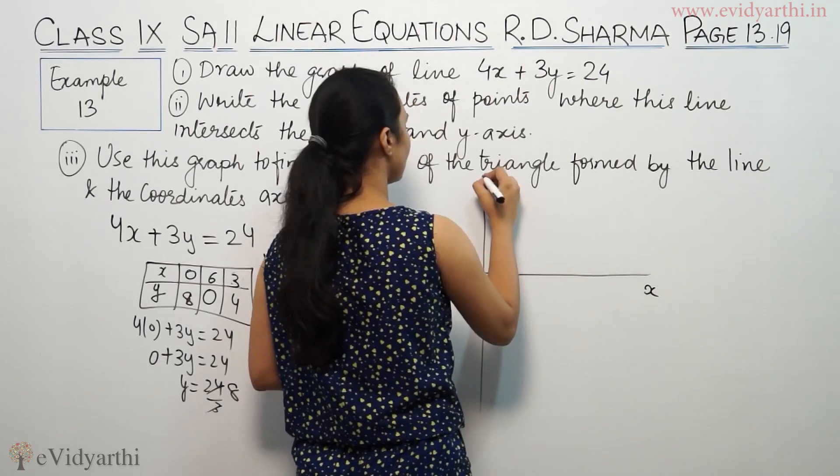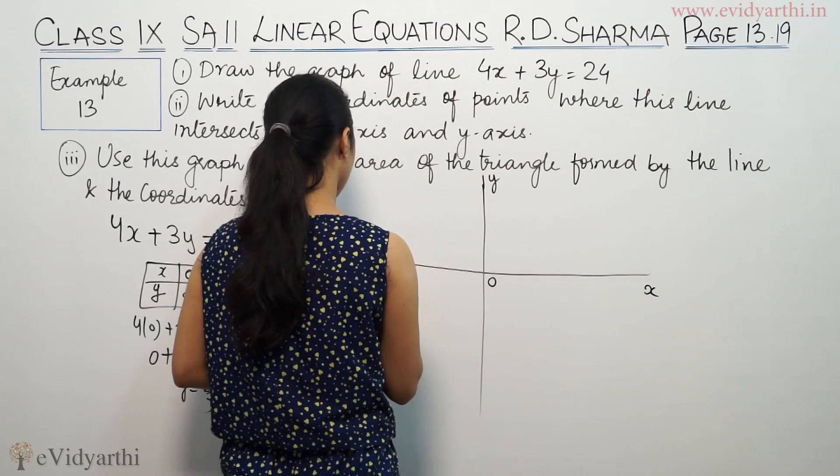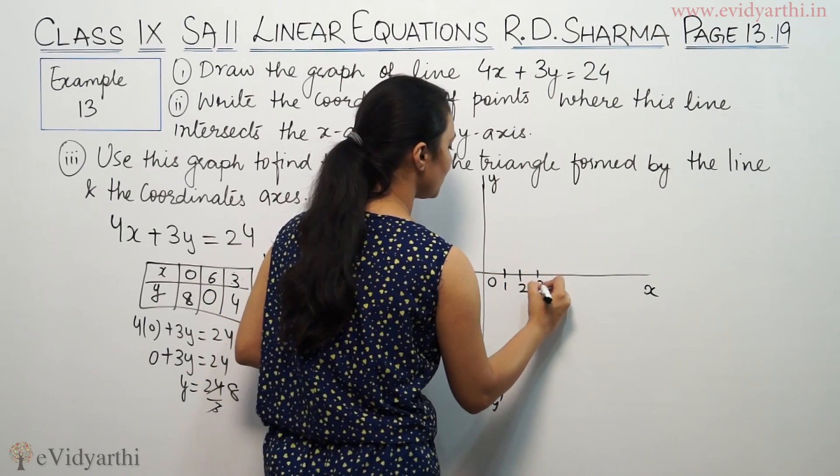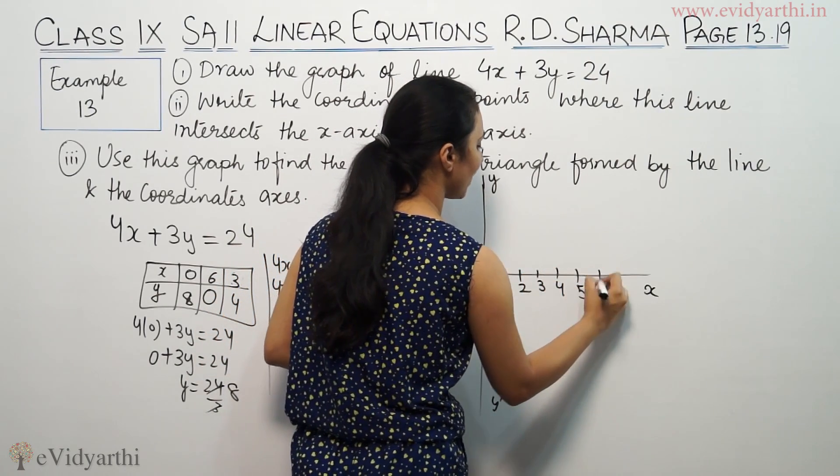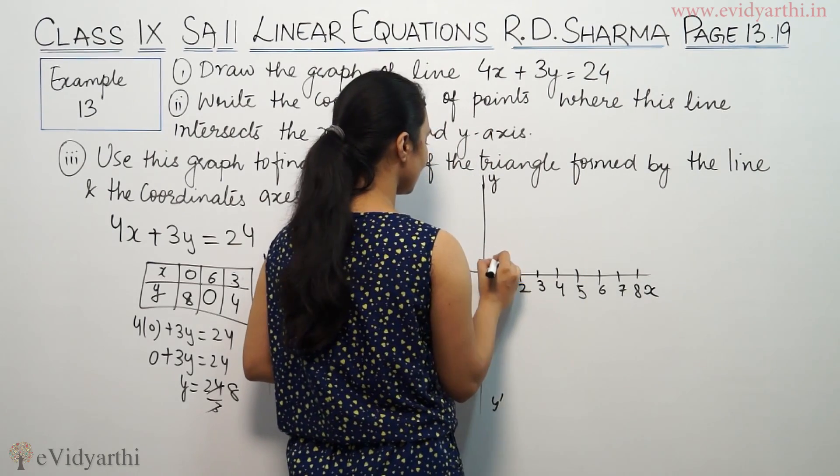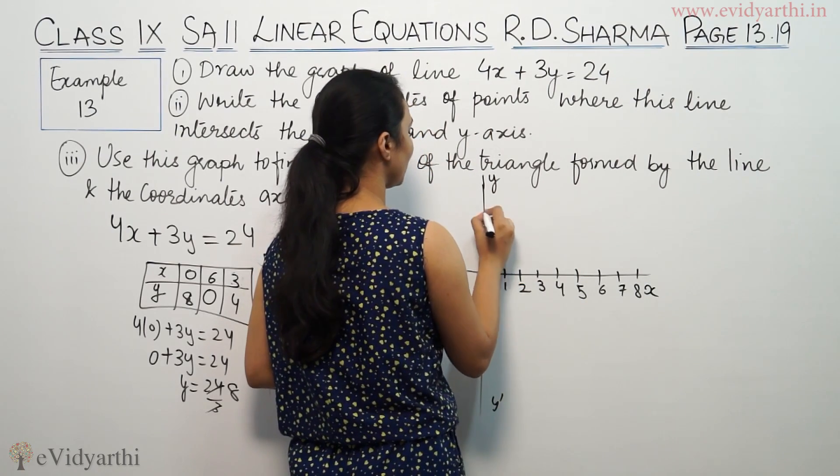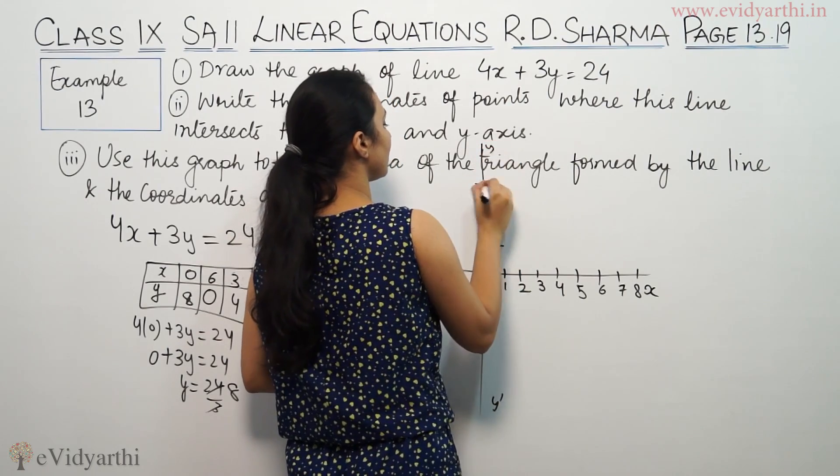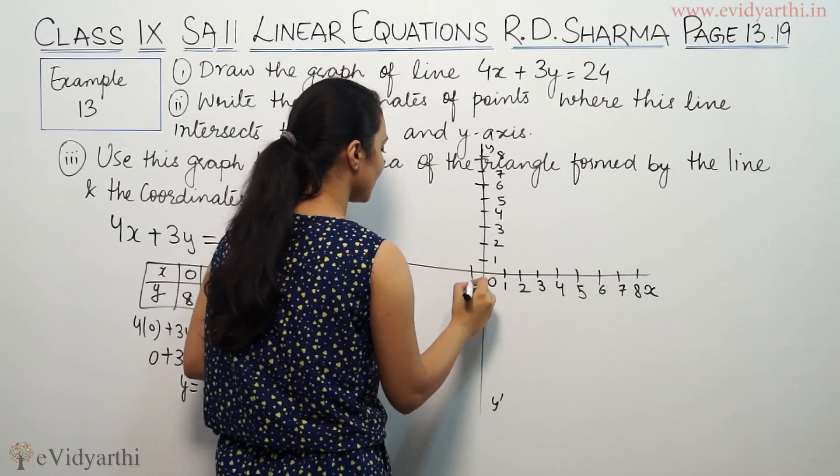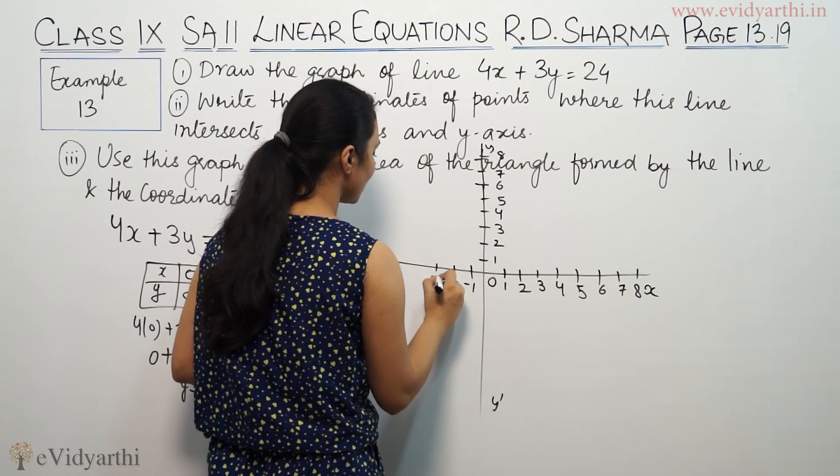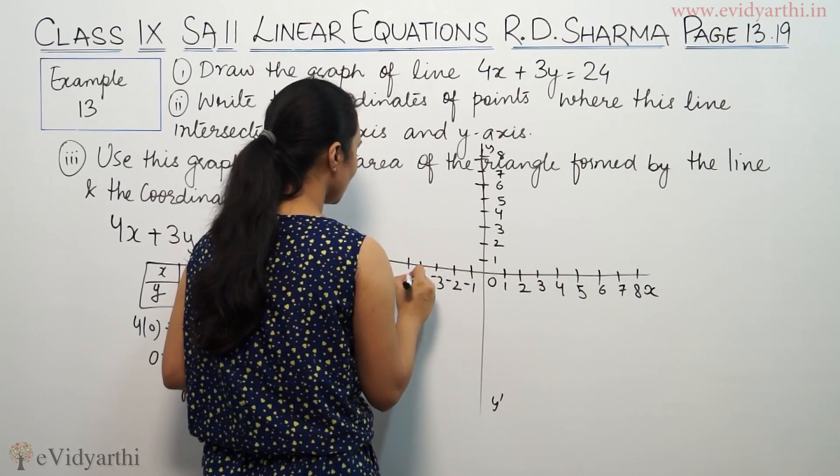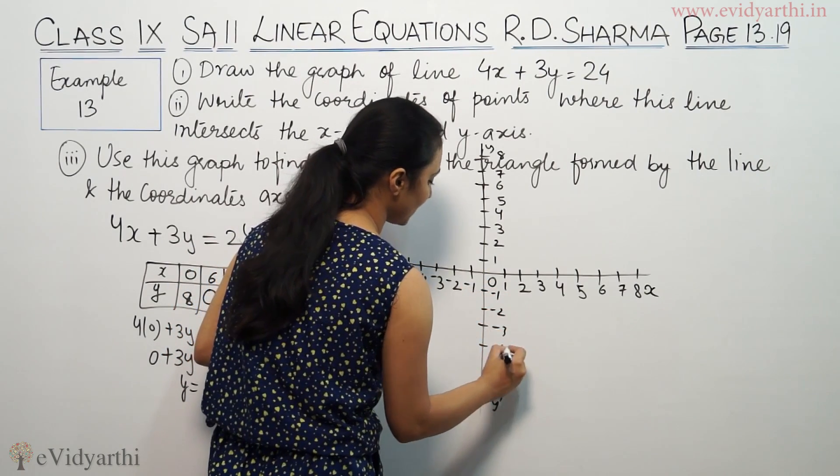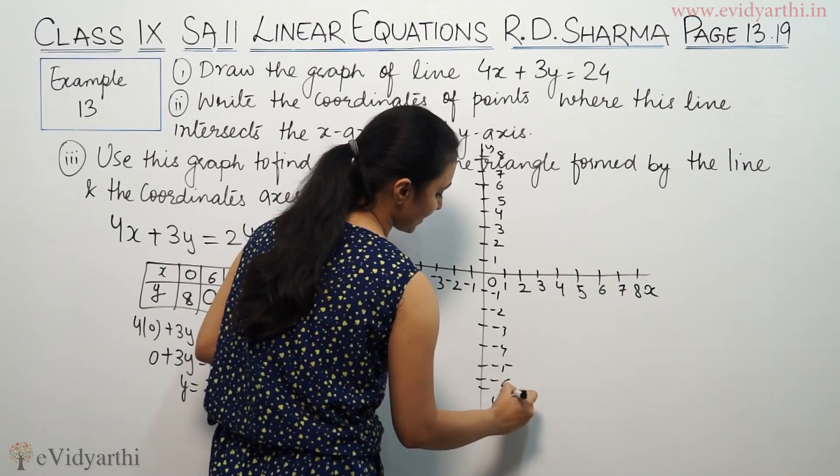This is x, this is y, this is x dash and this is y dash. Marking 1, 2, 3, 4, 5, 6, 7, 8 on the positive axes. This is minus 1, minus 2, minus 3, minus 4, minus 5, minus 6, minus 7 on the negative axes.